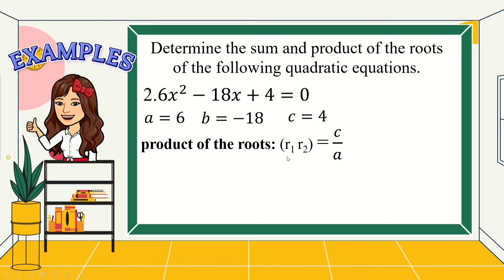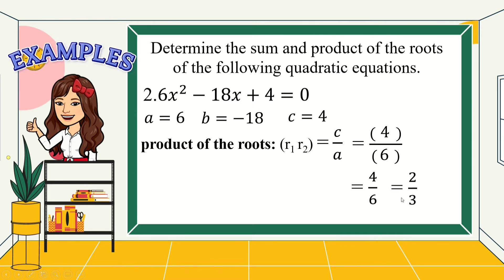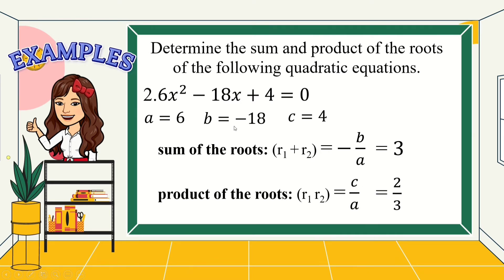For the product of the roots, we have c over a. Substituting, c is 4 and a is 6. 4 over 6, when simplified, the answer is 2 thirds. So the sum of the roots of 6x squared minus 18x plus 4 equals 0 is 3, and the product of its roots is 2 over 3.